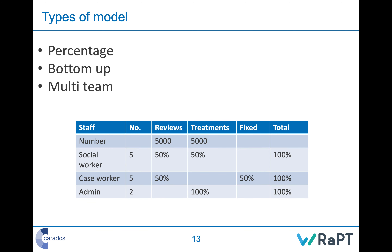There are three types of model: percentage, bottom-up and multi-team. The percentage model is how WRAPT works. A bottom-up model is where you work out all the tasks people do and how long each takes, add them all up, and that tells you how many people you need. A multi-team model is a version of the bottom-up activity model where you develop a standard model and apply it to multiple wards, care homes or other units with specific factors applied to each.